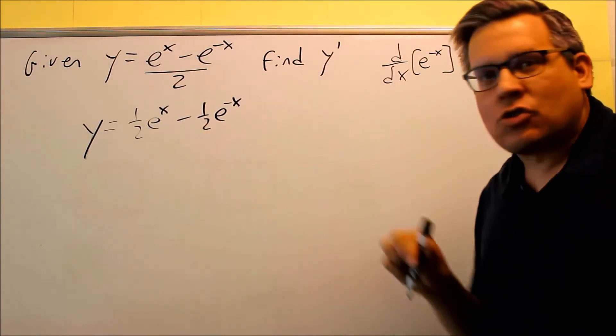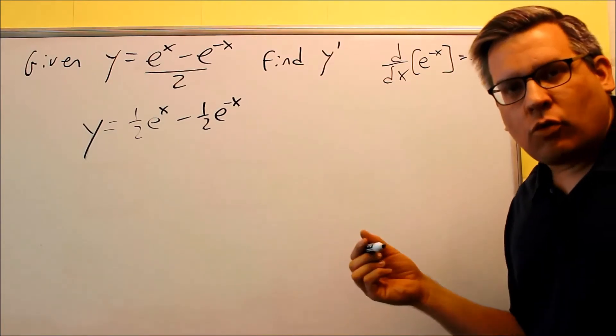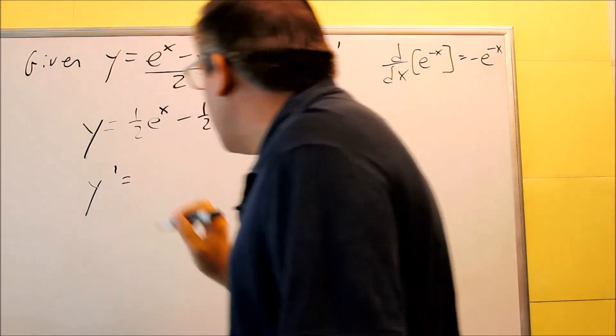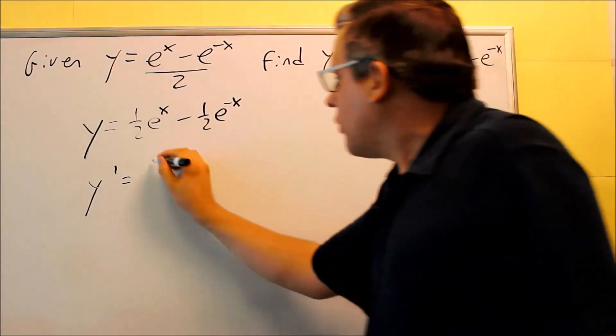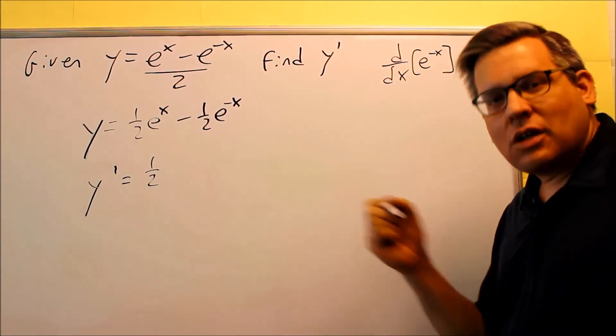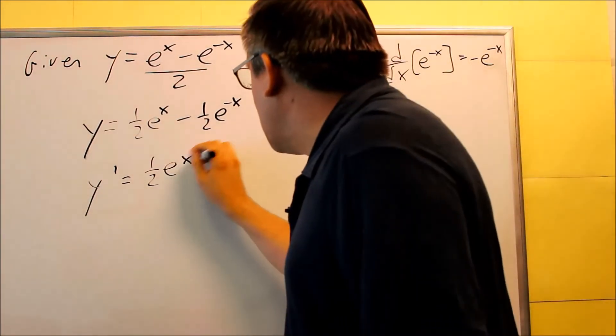So now, we can just take the derivative of each one separately, and we don't need to worry about using a quotient rule. Let's apply the derivative. When you apply derivative to this one, you're going to leave the one-half down front. The derivative of e to the x is e to the x, the same thing.